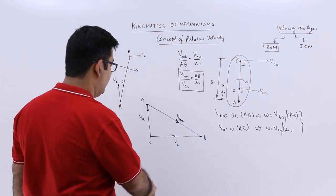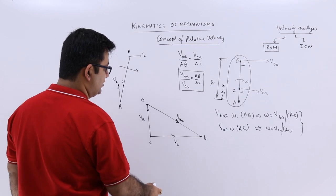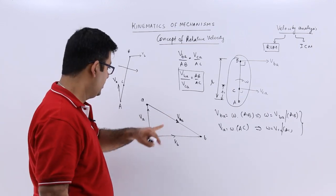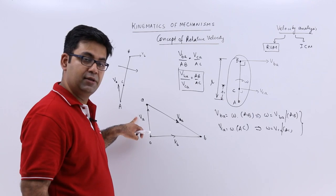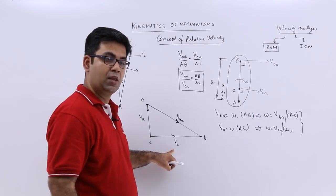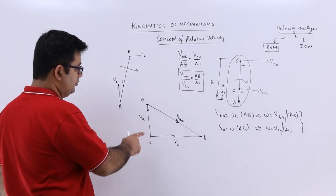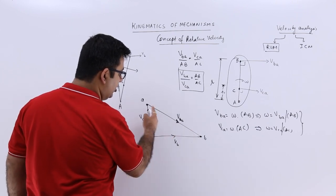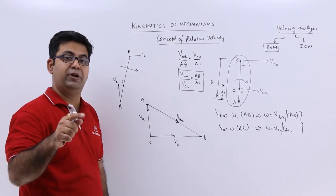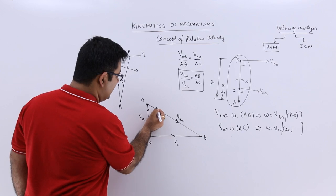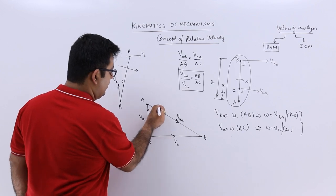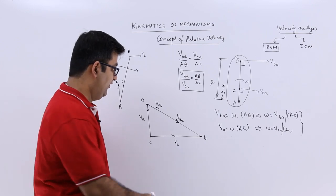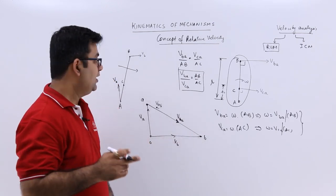In simple terms, VBA + VA = VB. The link is AB, and the vector VBA is the velocity of point B with respect to A. If the arrow were in the opposite direction, it would be VAB — the velocity of point A with respect to point B.